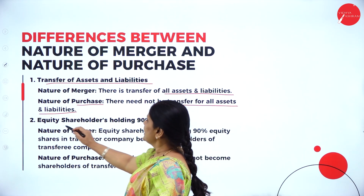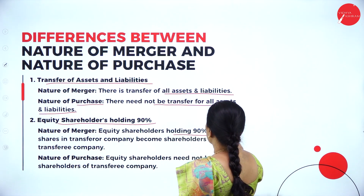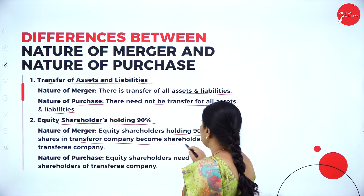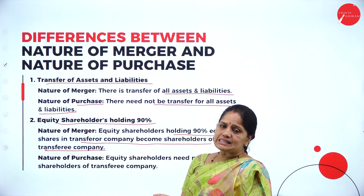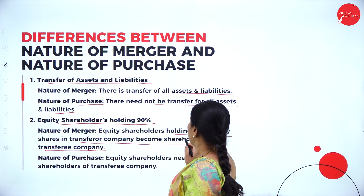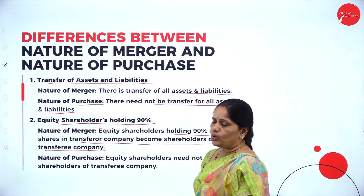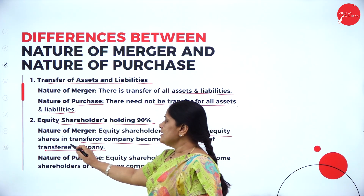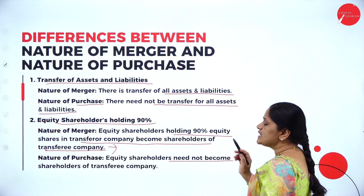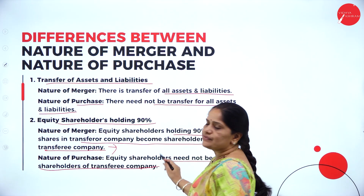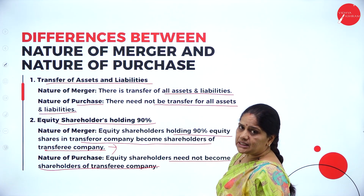The second difference is equity shareholders holding 90% shares. In the nature of merger, equity shareholders holding 90% of shares in the transferor company become shareholders of the transferee company — that is, the purchasing company. In case of nature of purchase, it is not mandatory for the equity shareholders to become the equity shareholders of the purchasing company.